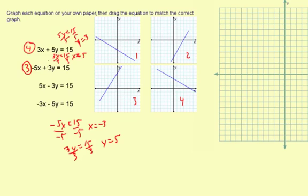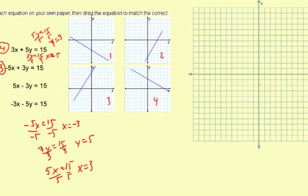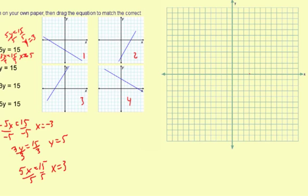Now let's look at the next one: 5x minus 3y equals 15. Here's the work for that one. I'm going to do 5x equals 15 first, and then divide by 5. So x equals 3. Then I'm going to put a point at x equals 3.